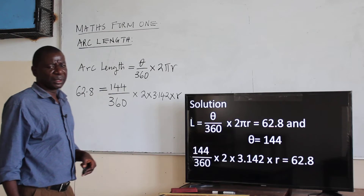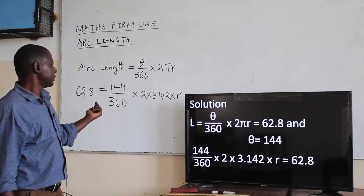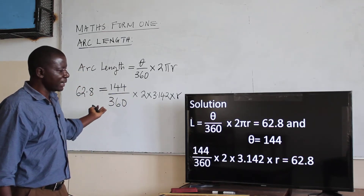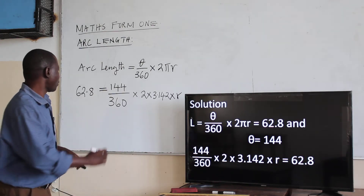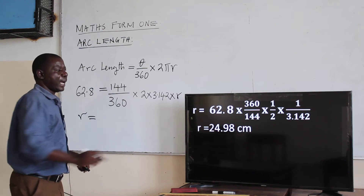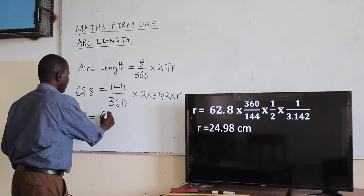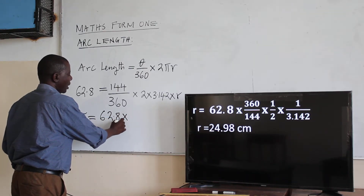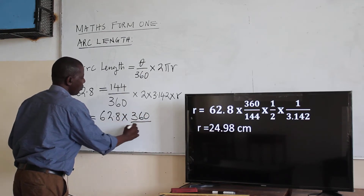From that substitution, we can go back and get R. We can cross-multiply, divide, and get R as the subject of the formula. So R is given by 62.8 multiplied by 360, divided by 144.